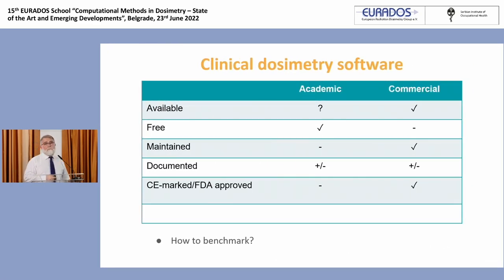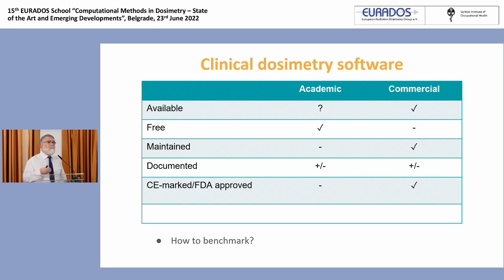Software. There are software tools to perform clinical dosimetry in nuclear medicine, and basically we can define them as academic software or commercial software. The commercial software are relatively new — maybe less than ten years, and more frequently less than five years. That table is mine, it's my current vision, and it's likely to evolve. These are my personal opinions.